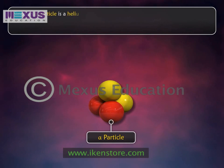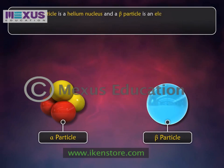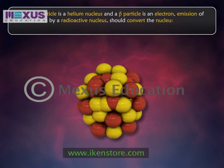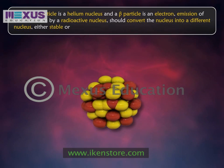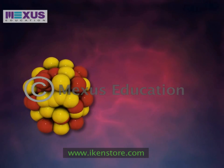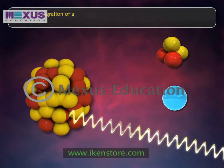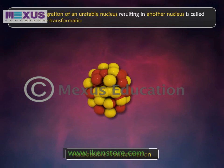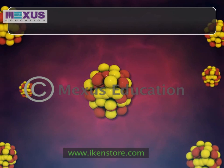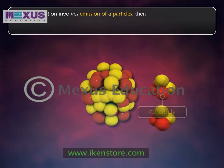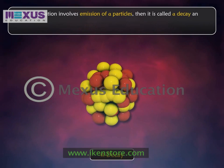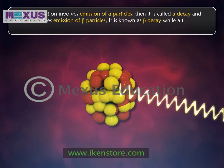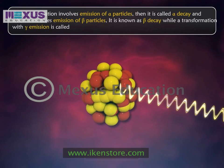Since an alpha particle is a helium nucleus and a beta particle is an electron, emission of either of them by a radioactive nucleus should convert the nucleus into a different nucleus, either stable or unstable. The disintegration of an unstable nucleus resulting in another nucleus is called radioactive transformation. If a transformation involves emission of alpha particles, it is called alpha decay; when it involves emission of beta particles, it is known as beta decay; while a transformation with gamma emission is called gamma decay.